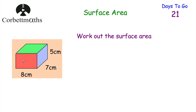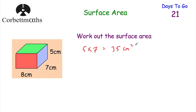So in terms of this cuboid, we've got the rectangle on the front, the rectangle on the top, the rectangle on the back, the rectangle on the bottom, the rectangle on the right and the rectangle on the left. Now the great thing is some of those rectangles will have the same areas. Let's start off with the rectangle on the right hand side — we've got 5 centimetres and 7 centimetres, so 5 multiplied by 7 equals 35 centimetres squared. That's the area of the face on the right hand side.